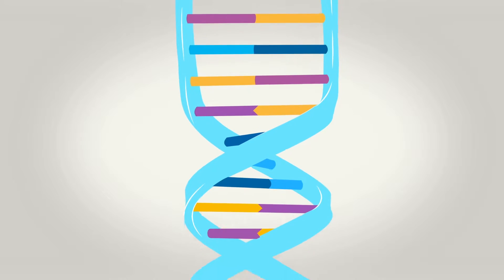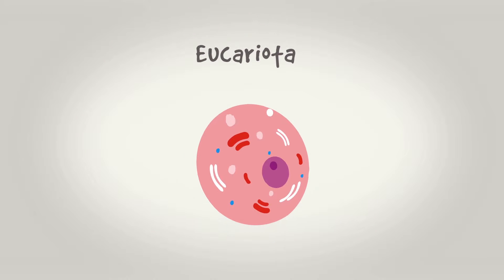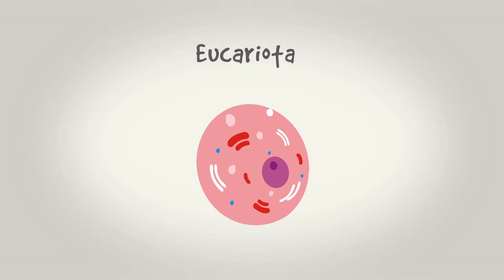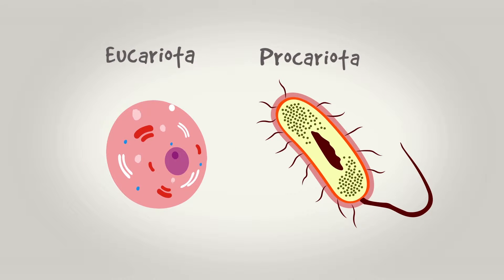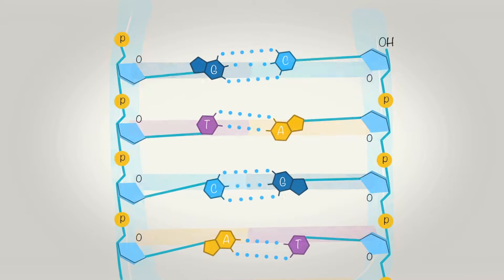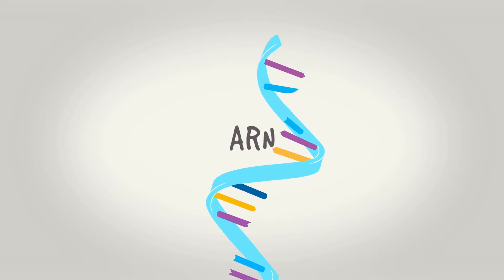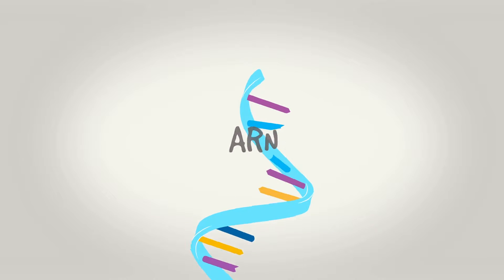Toda la estructura en conjunto se resguarda en el interior del núcleo de las células eucariotas, mientras que en células procariotas, está suspendido libremente en el citoplasma celular. Todos los nucleótidos en el ADN presentan como azúcar la desoxirribosa, mientras que en el ARN todos contienen ribosa.